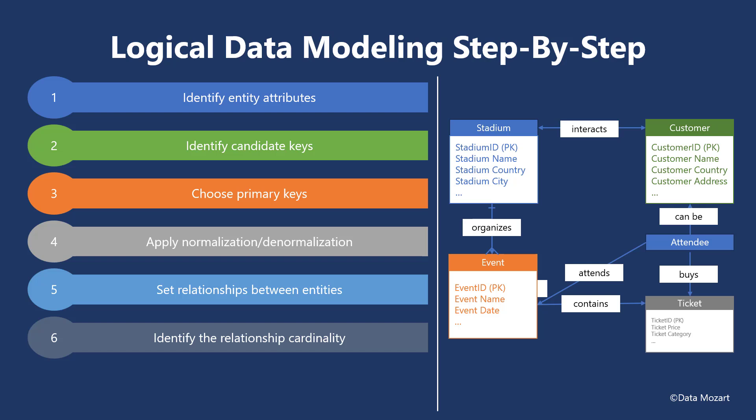There are three main cardinality types: one-to-one, one-to-many, and many-to-many.